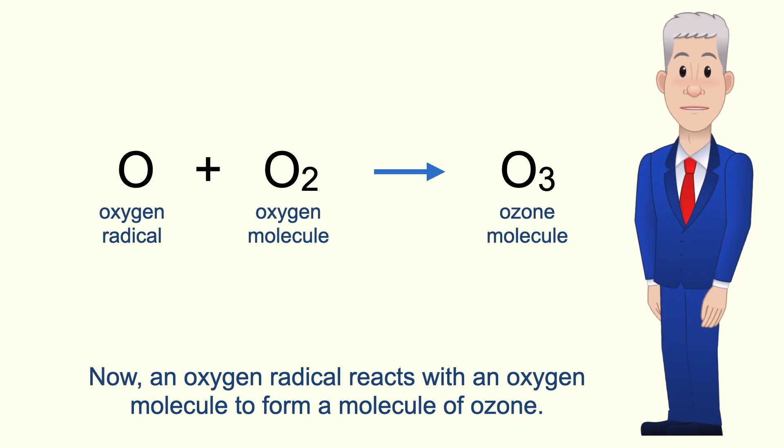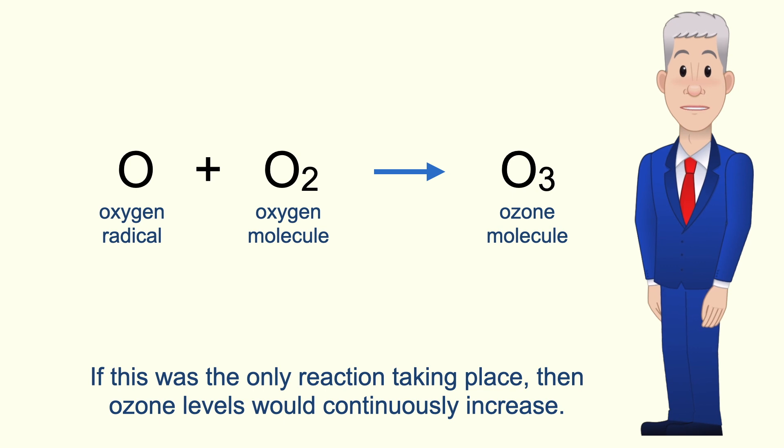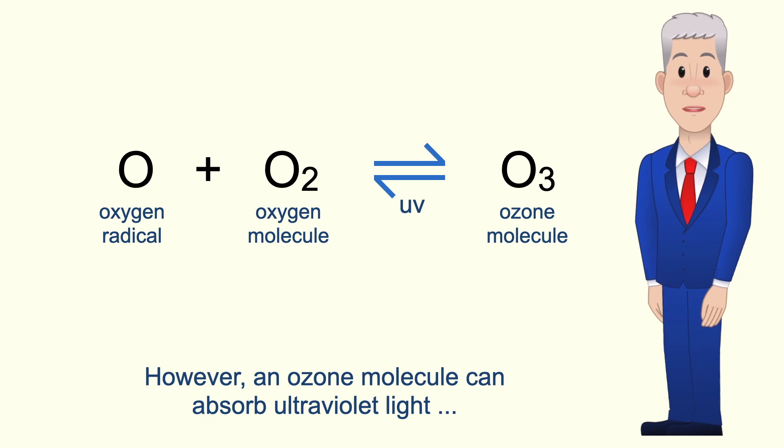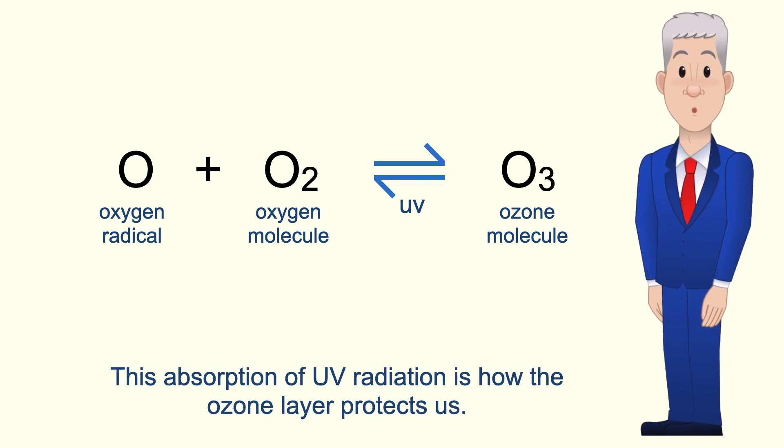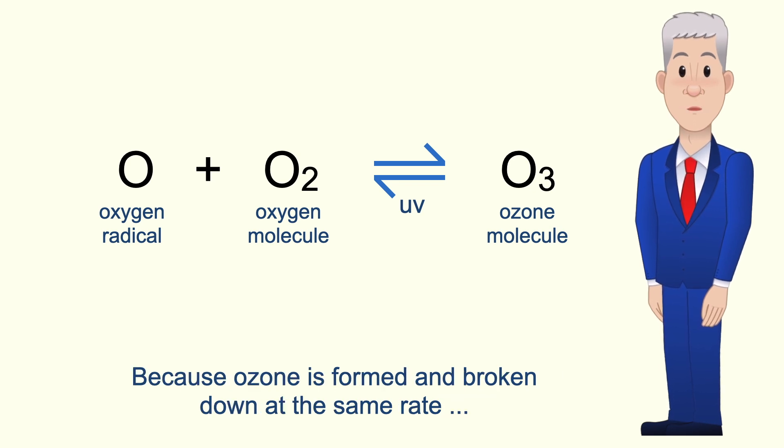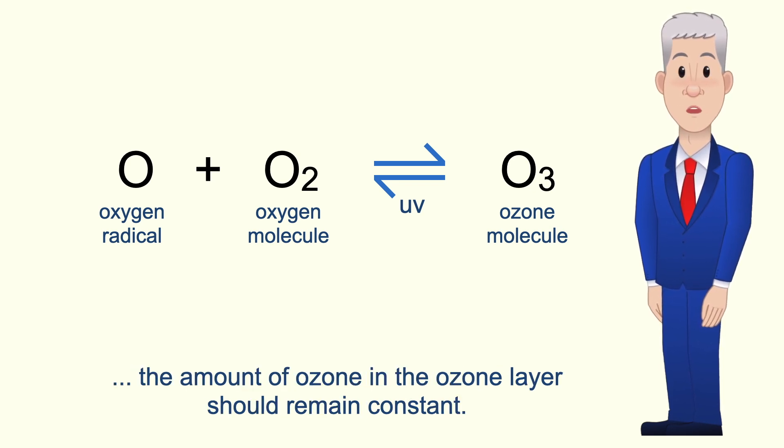Now an oxygen radical reacts with an oxygen molecule to form a molecule of ozone. If this was the only reaction taking place then ozone levels would continuously increase. However an ozone molecule can absorb ultraviolet light turning back to an oxygen radical and an oxygen molecule. And this absorption of UV radiation is how the ozone layer protects us. Because ozone's formed and broken down at the same rate the amount of ozone in the ozone layer should remain constant.